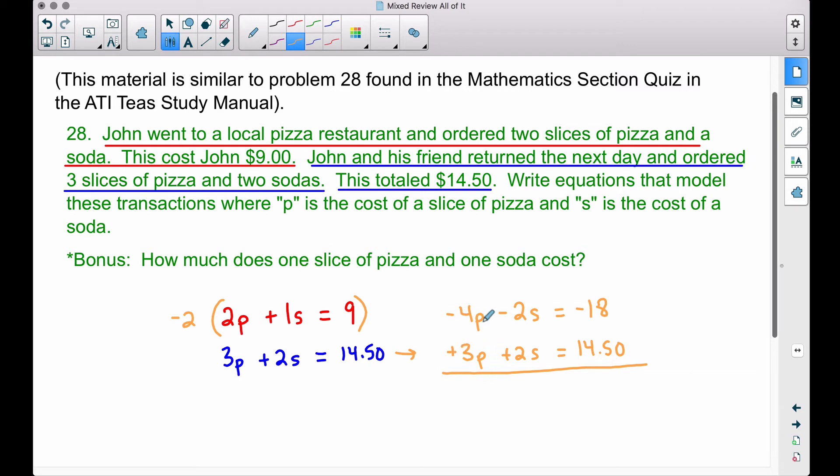If we combine the negative 18 plus 14.50, we get negative 3.50. Notice what we have here: we have an equation that we can solve for P. We can divide by negative 1, which is really just going to change the sign, and we have P equals 3.50.